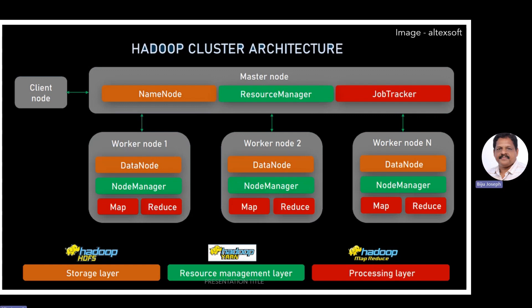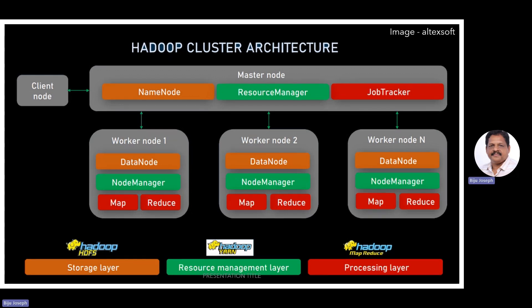Finally, there is MapReduce, which is the processing or computation layer. The JobTracker is the master of the MapReduce system which manages resource allocation, job scheduling and monitoring. Then we have YARN — Yet Another Resource Negotiator. The resource manager is the master that arbitrates all available cluster resources and helps manage distributed applications running on the YARN system. I hope this helps you understand the Hadoop cluster architecture.